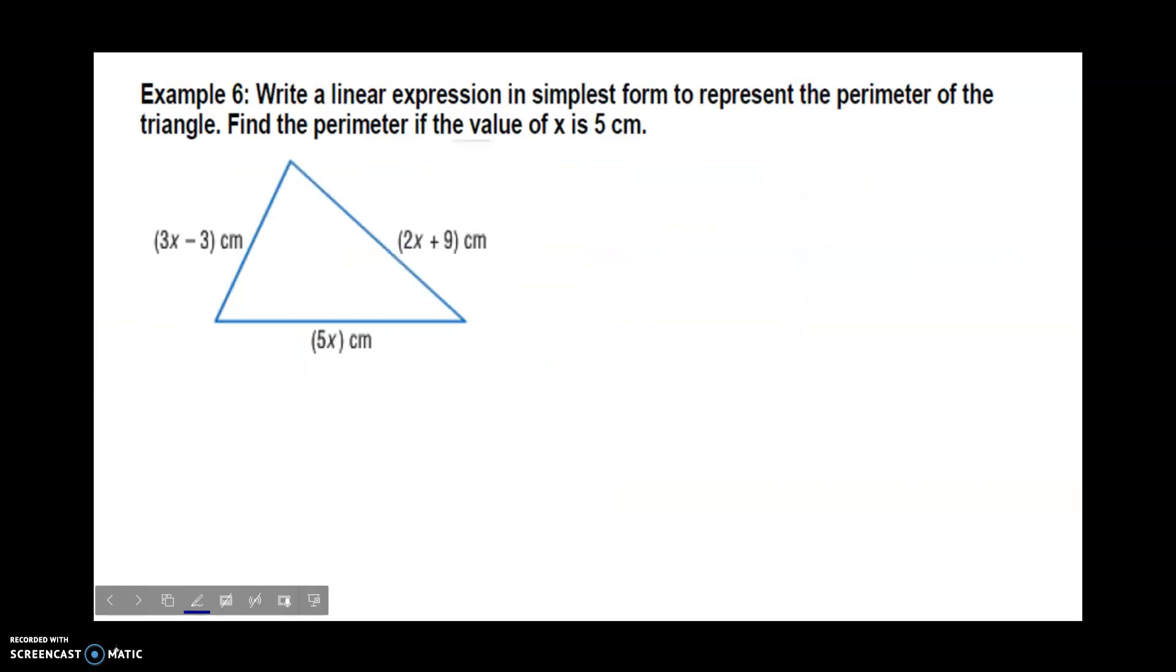You will see some questions like this about finding the perimeter of the triangle in simplest form. To find perimeter of any closed shape, remember we can just add all the sides. So I can take that 2x plus 9, combine it with the 5x and the 3x minus 3. I'm going to find all my x's, 2x plus 5x plus 3x, that's 10x. Positive 9, subtracting 3. If I'm adding 9 and subtracting 3, 9 minus 3 would be 6, so I have 10x plus 6.